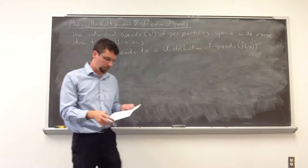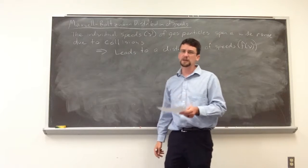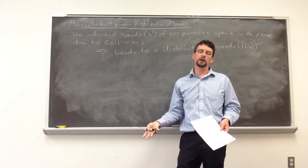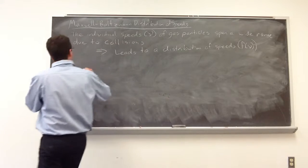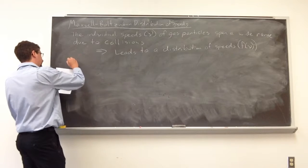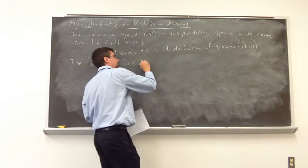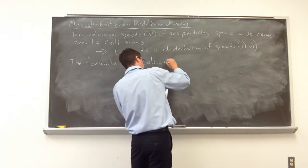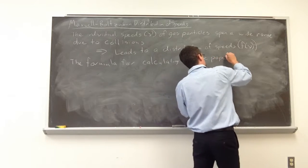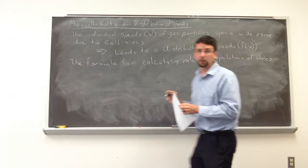So when we're talking about a distribution, most of the time we're talking about a Boltzmann distribution. And really what we're considering is differences in energies. So the formula for calculating relative populations of states is called a Boltzmann distribution.